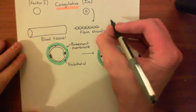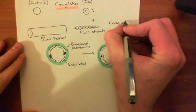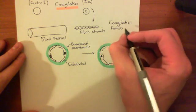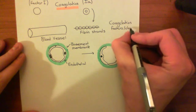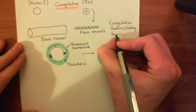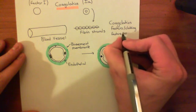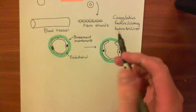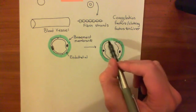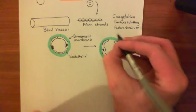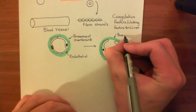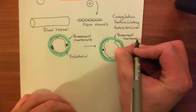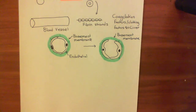Coagulation factors are made by the liver — 'clotting factors' is the older name, but coagulation factors is probably the better term. When these coagulation factors come into contact with the collagen of the basement membrane — which only happens following endothelial damage — those coagulation factors are activated by the exposed collagen.